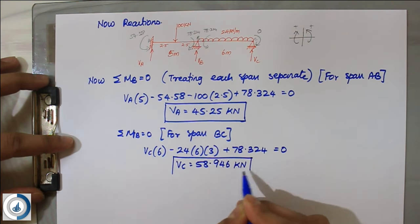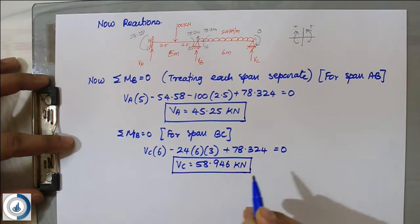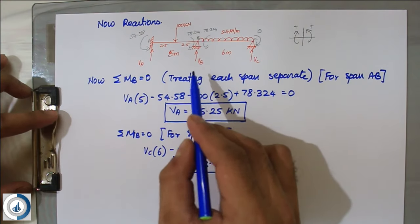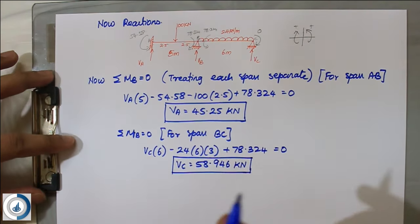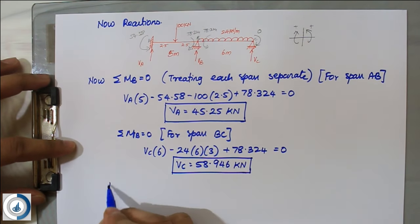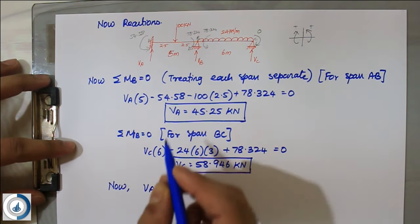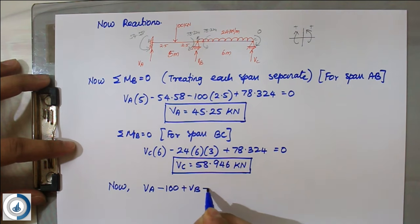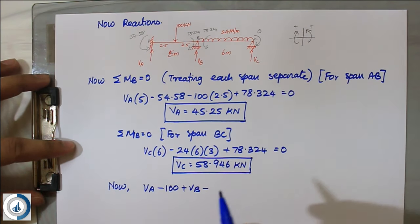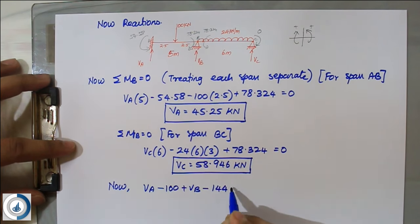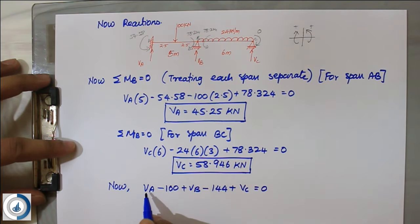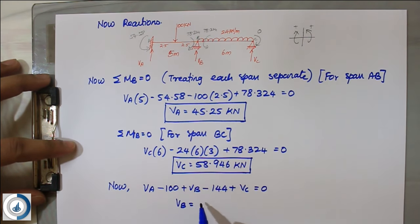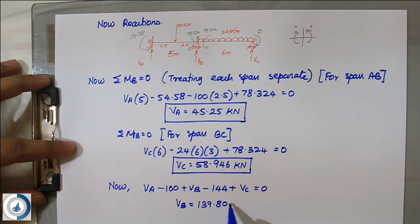With VA and VC known, apply vertical equilibrium for the whole beam to find VB: VA − 100 + VB − 144 + VC = 0, where 144 = 24 × 6 (total UDL). Substituting VA = 45.25 and VC = 58.946 gives VB = 139.80 kN.